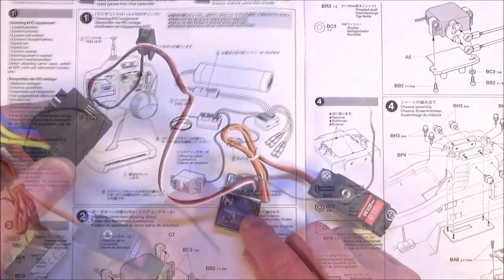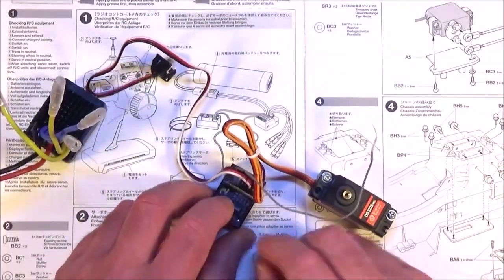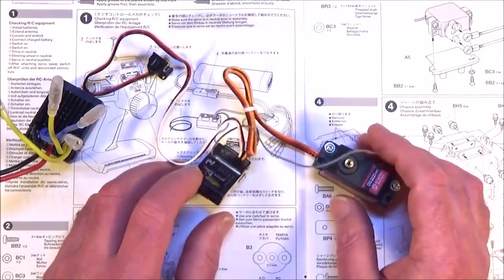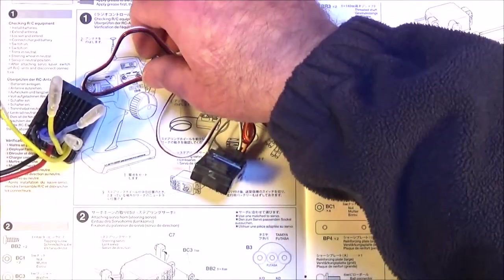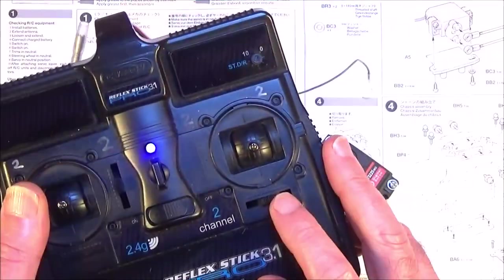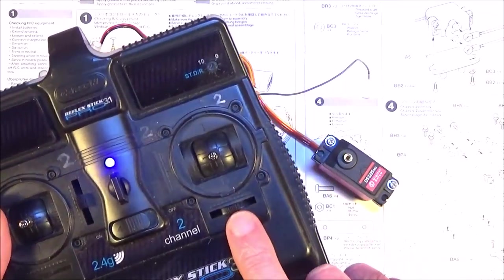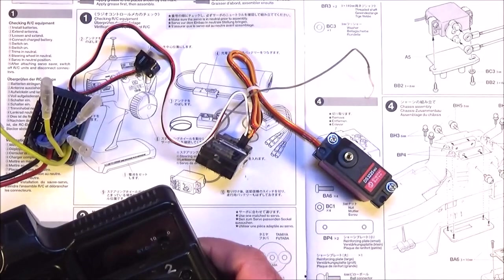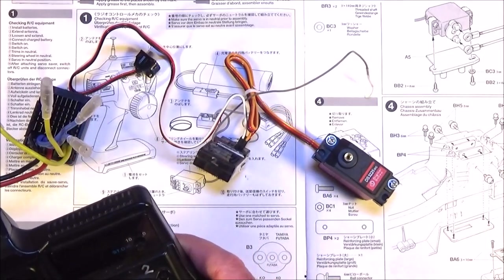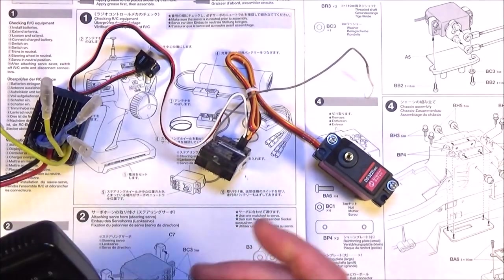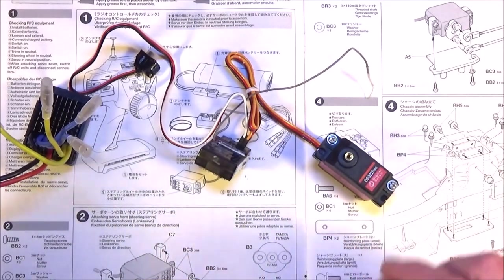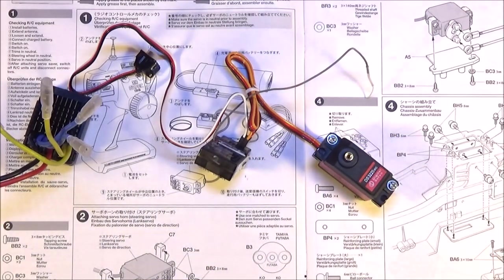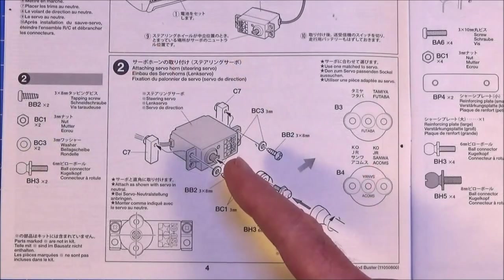So get the supplied ESC, connect it to your receiver, plug in your servo and basically connect it to a battery and turn it on. Get your transmitter, make sure that your steering trim is in neutral in the central position and give it a throw from left to right. Get the servo moving and then let it center and then basically just turn it off and that's your servo centered onto step 2 which is attaching the servo horn.